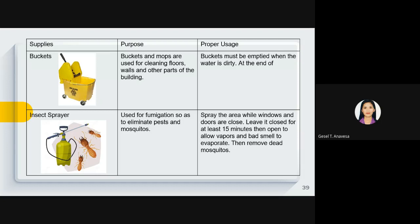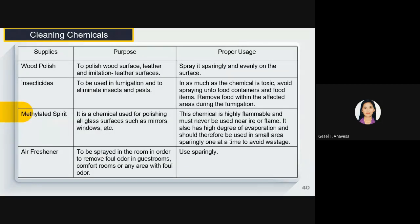Insect sprayers are used for fumigation to eliminate pests and mosquitoes. Now for cleaning chemicals and supplies: wood polish is used to polish wood surfaces, leather, and imitation leather surfaces — spray sparingly and evenly on the surface. Insecticide is used in fumigation to eliminate insects and pests; since the chemical is toxic, avoid spraying near food containers and remove food from affected areas during fumigation. Methylated spirits is a chemical used for polishing all glass surfaces such as mirrors and windows; this chemical is highly flammable and must never be used near fire or flame.